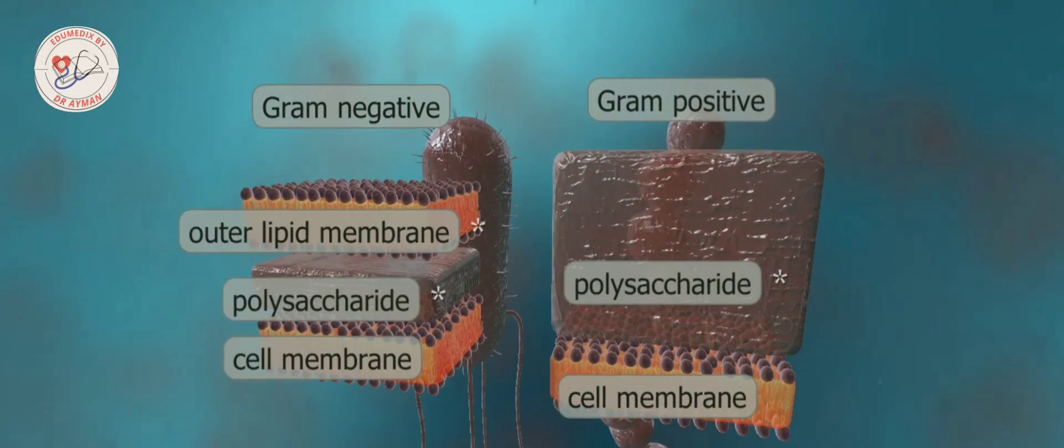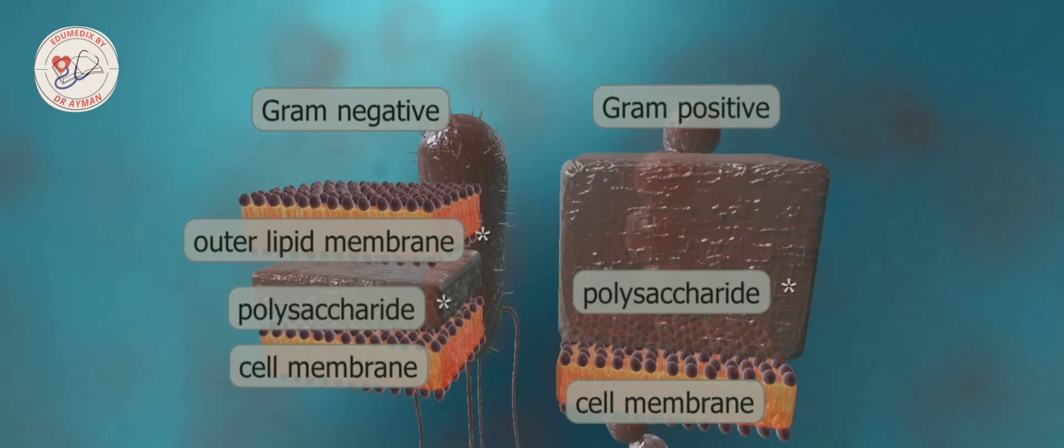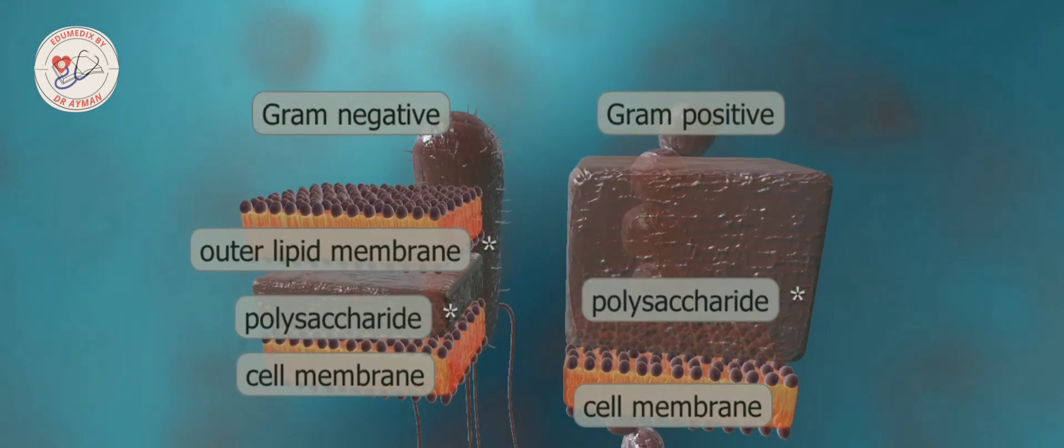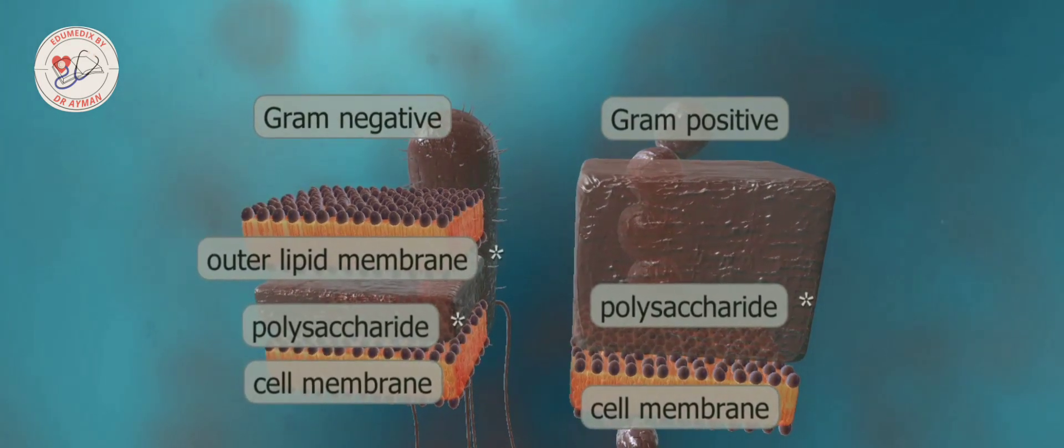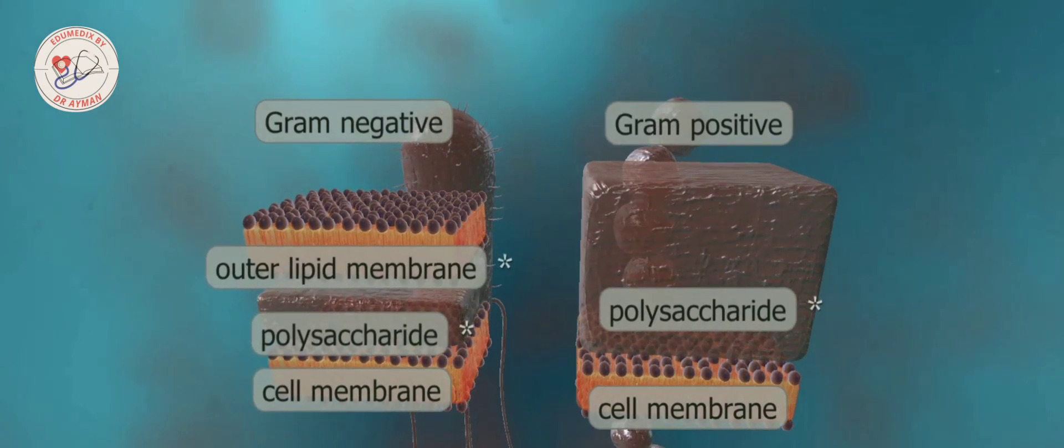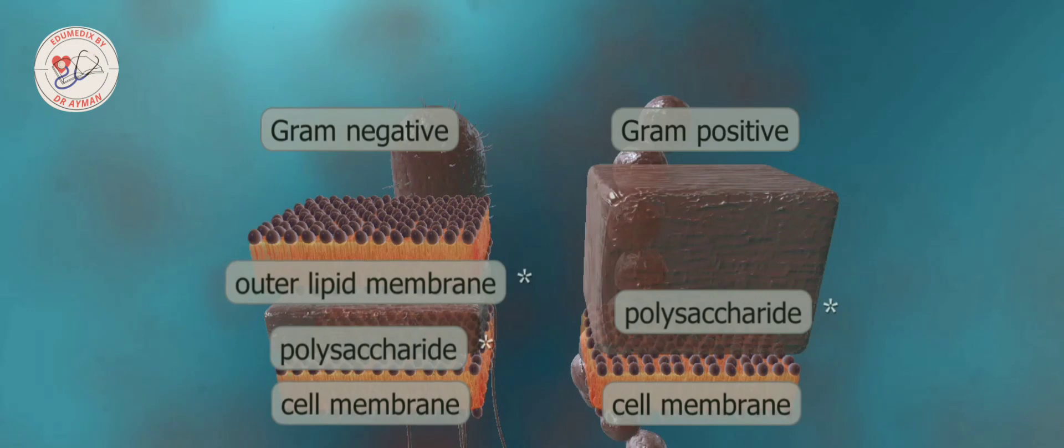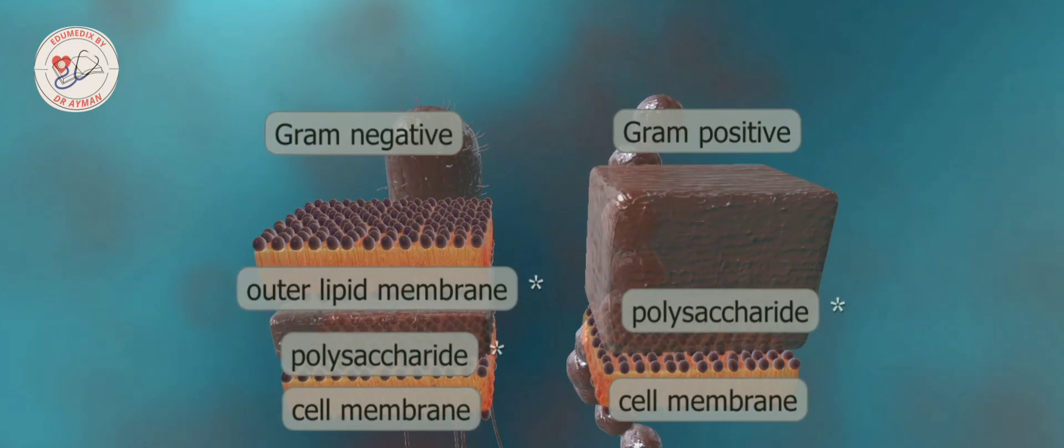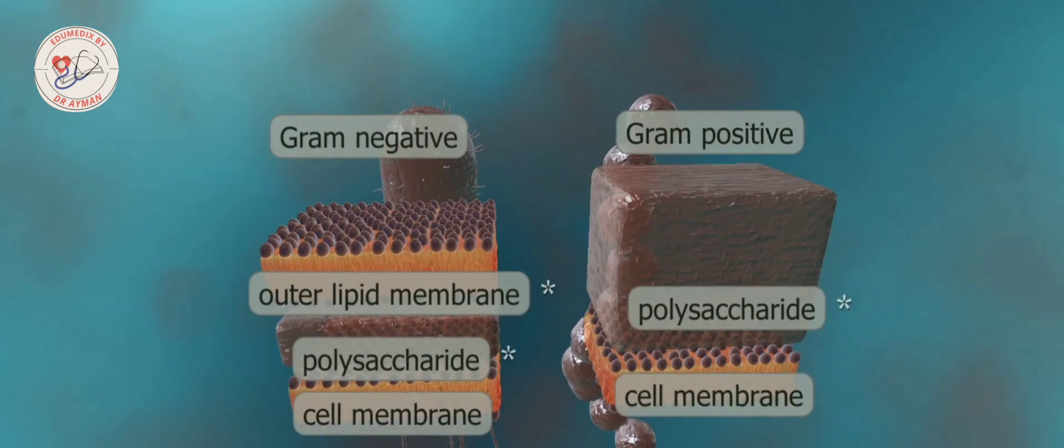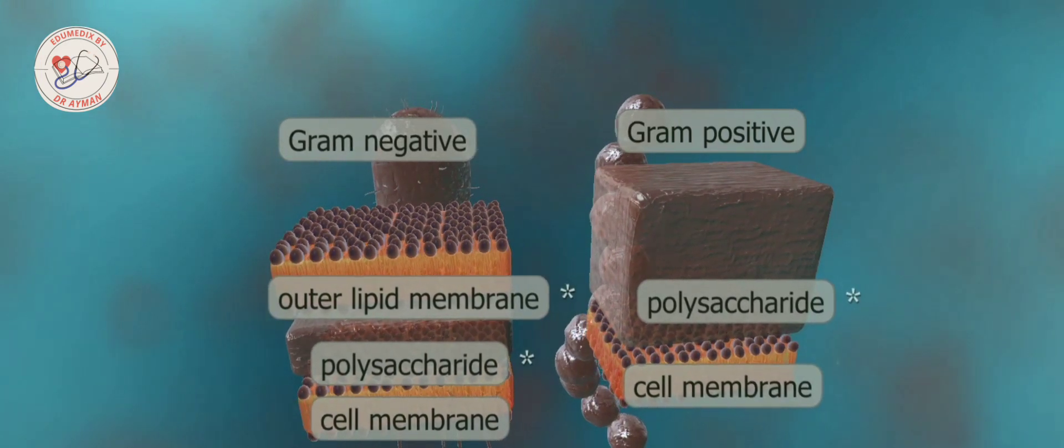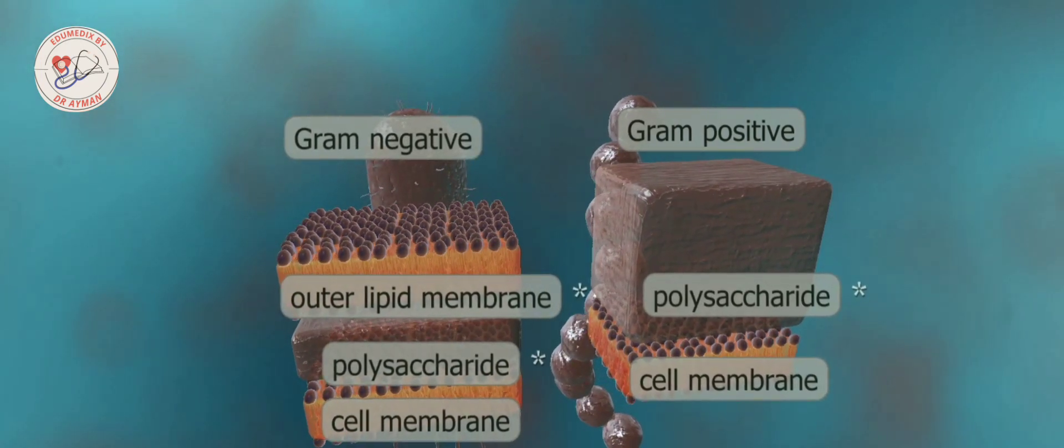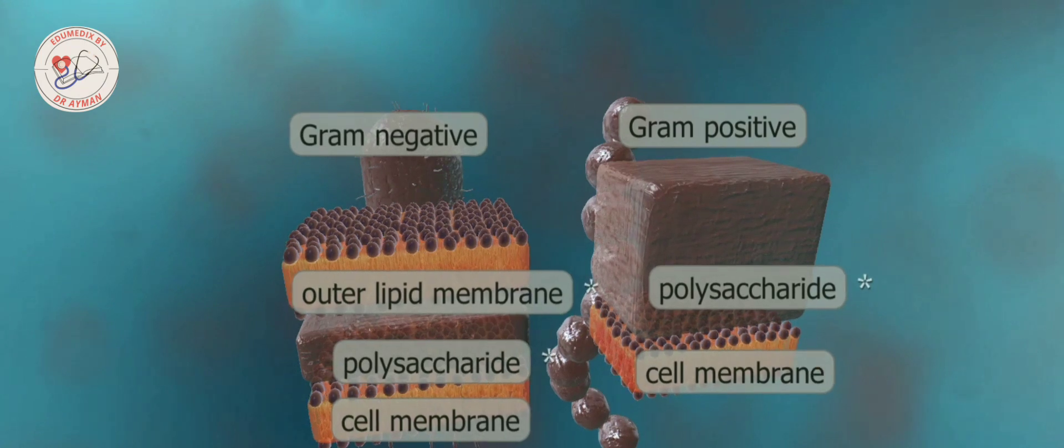Gram staining is a method of differentiating bacteria into two groups, i.e. gram-negative and gram-positive. The basis of differentiation is that staining produces different results in the cell walls of different types of bacteria because of their different structures. The two types of bacteria react to antibiotics differently, so treating different bacterial infections requires different antibiotics.